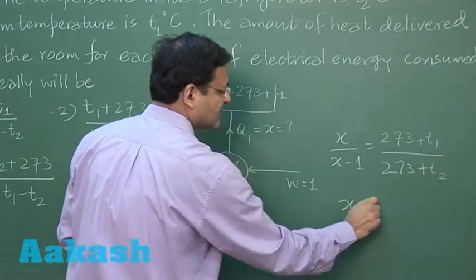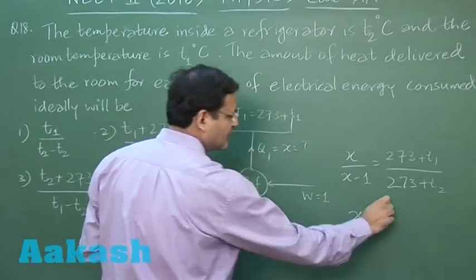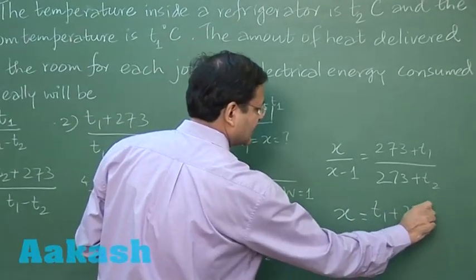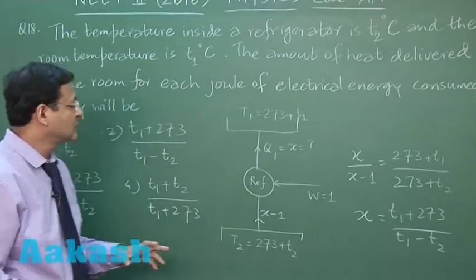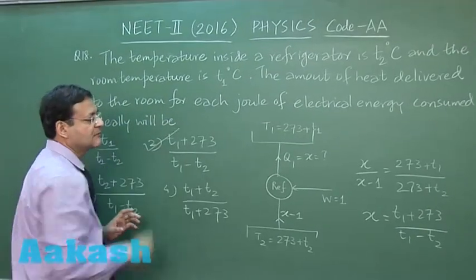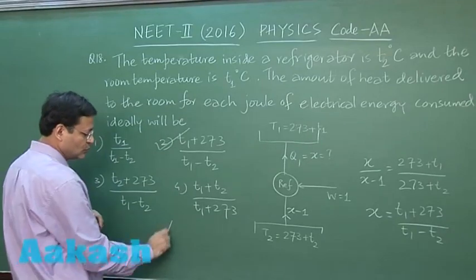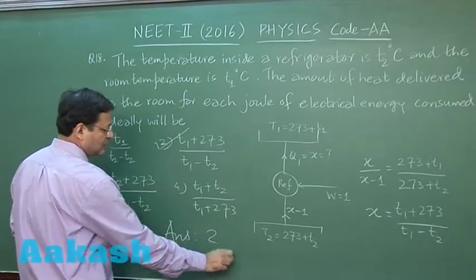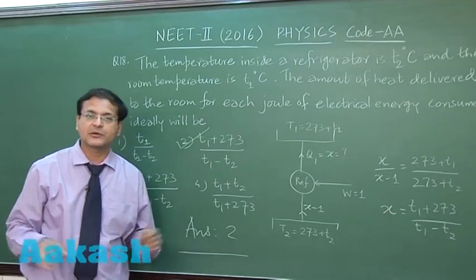So you have to do the cross multiplication and solve for X. If you solve for X, you will be getting T1 plus 273 upon T1 minus T2. This is what you will be getting. So this second option will be the option for this particular question. I will be marking answer 2 for question number 18. Now let us switch over to question 19.